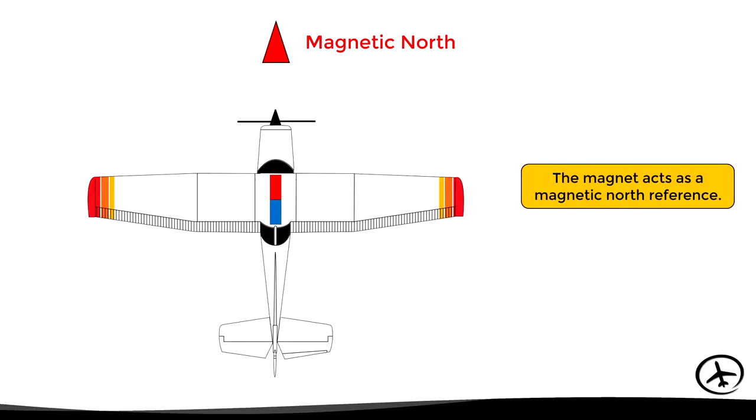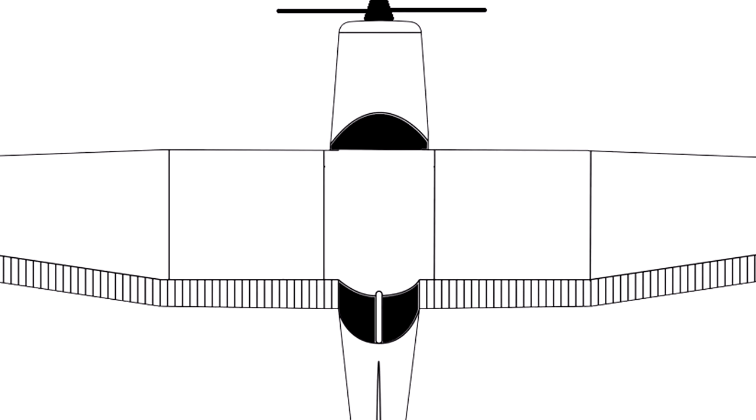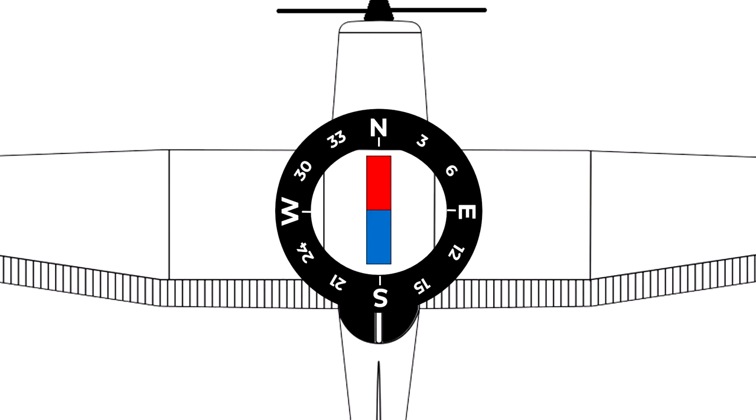The question now is how can we take advantage of this to determine the aircraft's current heading? To do this, we can add a card with the compass rose around the magnet in such a way that both move together, and apart from this, a heading indicator fixed to the fuselage is added.